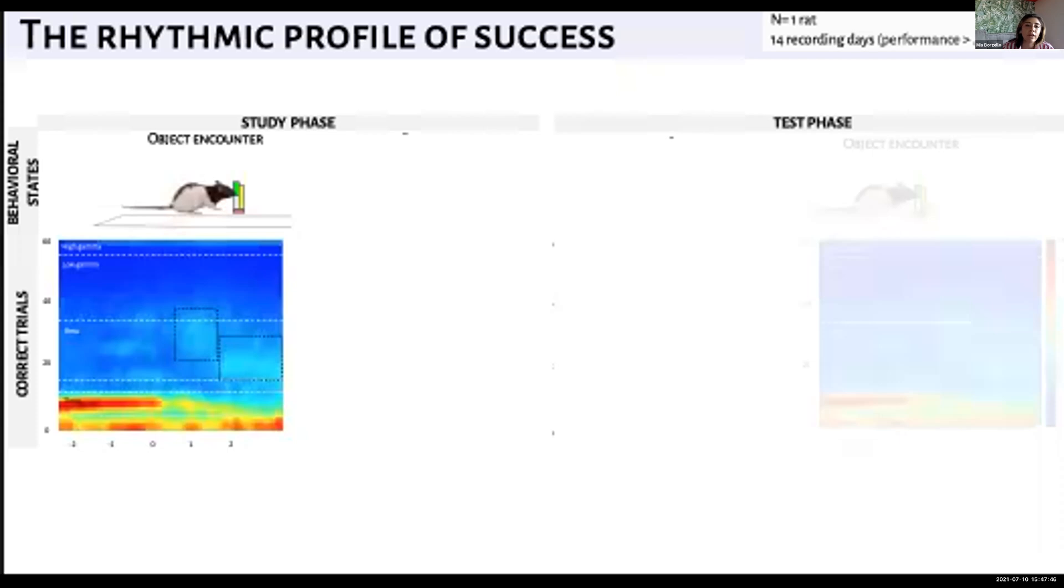This is an important interval in the task because the object, the correct spatial location, and the reward all co-occur in time and space. Correct trials can serve as a proxy for successful pattern separation ability. Here we observe a shift to higher frequencies during object push, indicated by this flush of turquoise at the one to two second mark.